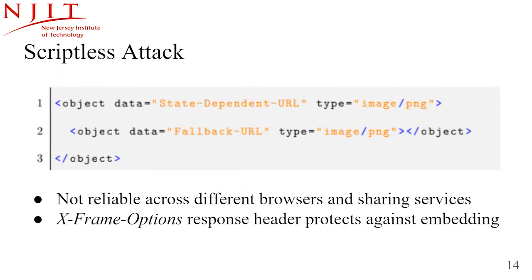In the object tag fallback example, the outer object tag points to the state-dependent URL. If the request to this STURL fails, the inner object HTML tag will be rendered and notify the attacker that this is not the targeted victim; otherwise, the attacker learns the current user is the targeted victim. However, the object tag fallback has limitations — our experiments show it is not reliable across different browsers and sharing services, and the X-Frame-Options header can be set in the response to prevent the browser from rendering the resource.